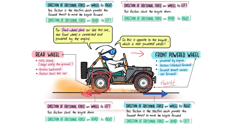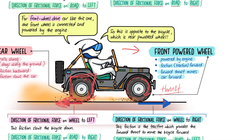They can also ask about a rear-wheel-drive car — if it's rear-wheel drive, the friction on the back wheel is forward. Or it could be a four-wheel drive, where all four wheels are connected to the engine, so all four wheels have their frictional force pointing forward. Read the question carefully and you should be able to tackle all these questions.